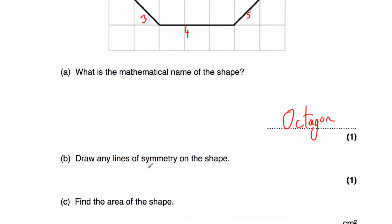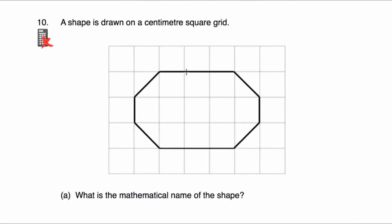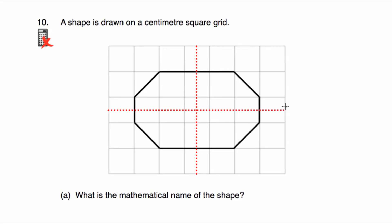Part B says draw any lines of symmetry on the shape. Looking at the octagon — it's not a regular octagon because all sides aren't the same length; the top has a length of three centimetres while the left side has only one centimetre. So let's find the lines of symmetry. It's got a vertical line of symmetry because it's the same on both sides, and also a horizontal line of symmetry across the middle. So it has two lines of symmetry.